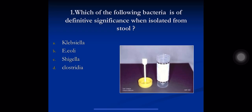There are plenty of bacteria which live as commensals in the intestine. E. coli, Klebsiella, and Clostridia are all commensals in the intestine. So if you isolate these from a stool sample, they can be either commensal or pathogen. But Shigella does not live as a commensal in anybody's intestine, so if Shigella is isolated from a stool sample, it is definitely significant. The correct option is C) Shigella.